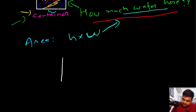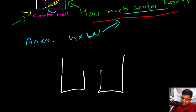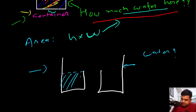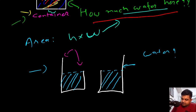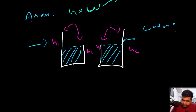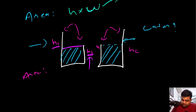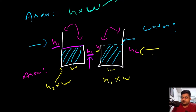Now suppose we are given a container with two different side heights. We can only fill water up until the lower edge, not more. If one side is h1 and the other is h2, we use the smaller height in our area calculation. So the area is: min(h1, h2) times width. This minimum-height rule applies regardless of which side is taller.